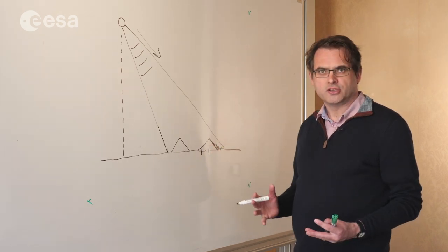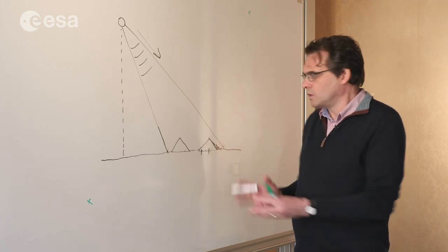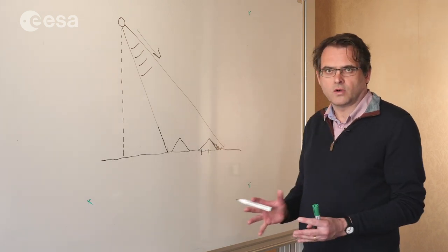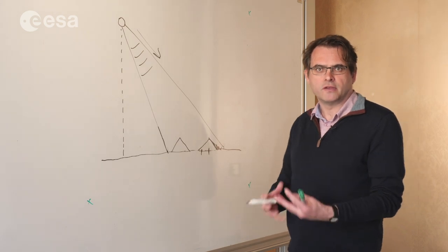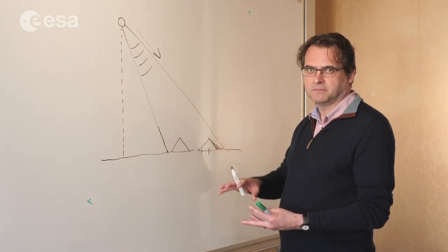In an image, this tends to lead to what's called foreshortening, so that one side of the topography will get squashed up. For things like mountains or buildings, it makes it look like they're leaning over or leaning towards the sensor system.